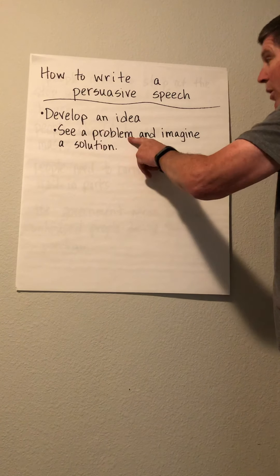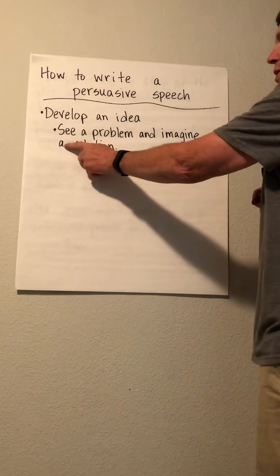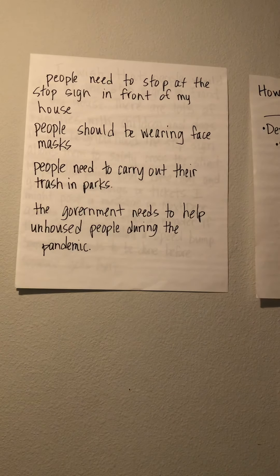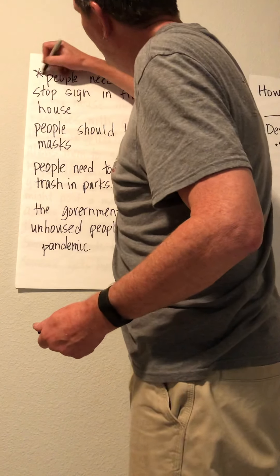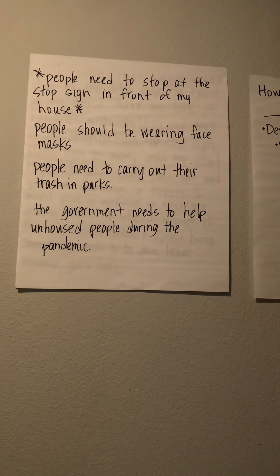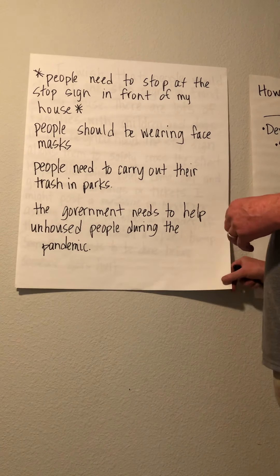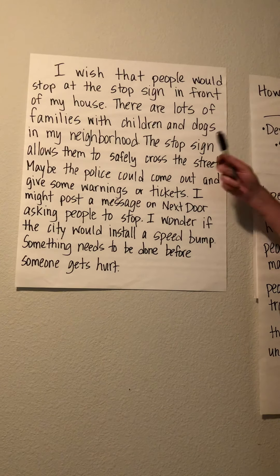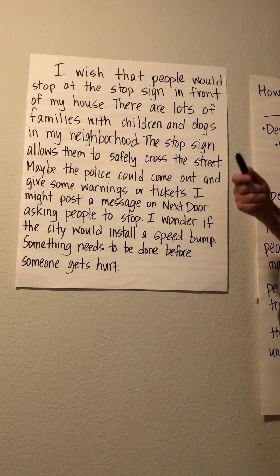Then part two, which I'm about to show you, is you're going to pick one and imagine a solution — and that's your actual writing. After you develop the four ideas, pick one. You need to do at least one. I am going to do the stop sign one because as I was coming up with this list, I looked out my window and saw a car run right through the stop sign. So I feel really strongly about it. I have already done the writing because I don't want you to stand here watching me write all of that.